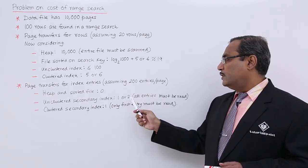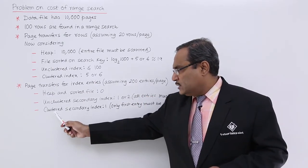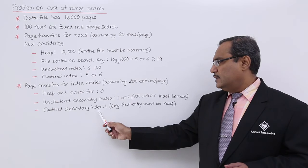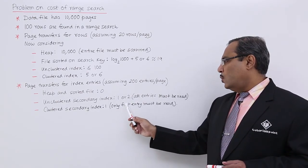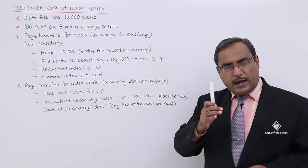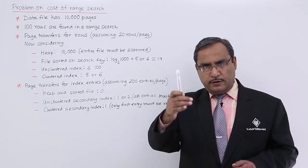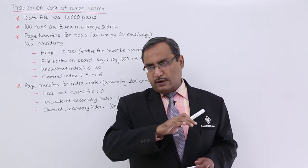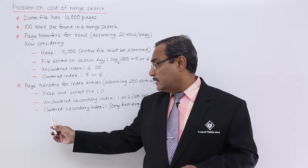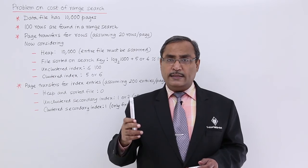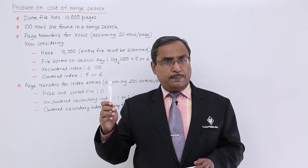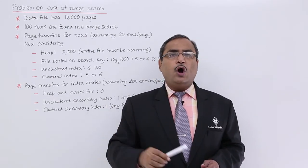Here for this 100 rows as we are having 200 entries per page, for 100 rows I think minimum 1 page has to be read or 2 pages are to be read. That is why we are keeping this 1 or 2. In case of clustered secondary index we are going to put this value 1 because only the first entry must be read and other entries can easily be obtained from the table. After going to the table, because it is the clustered index, that means the index entries will remain in the same order in which the tuples or records are existing on to the data file.